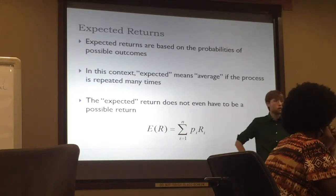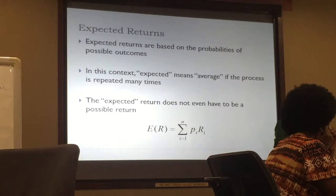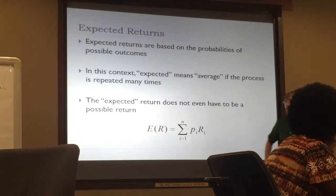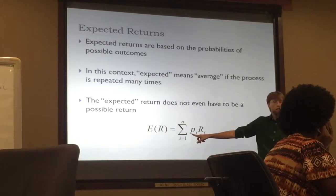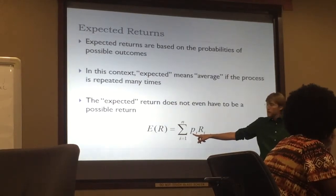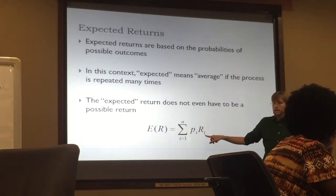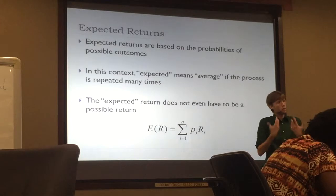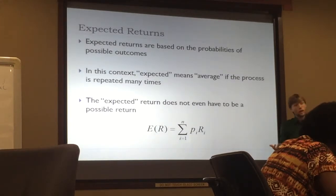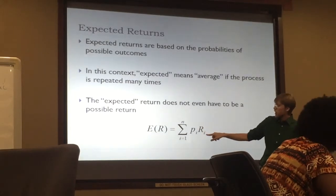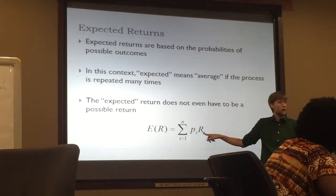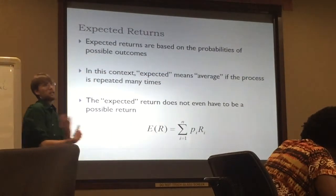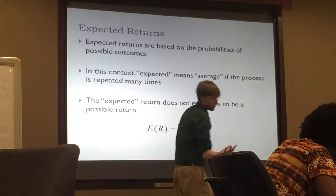If I'm thinking about my expected return going forward, I'm going to divide the future up into N possible future states. Each of those N possible outcomes has some probability PI — some likelihood that it will occur. RI represents the return in state I. My expected return is simply a weighted average: I take each of the possible outcomes RI and multiply them by the likelihood of actually getting those returns, weight them by the likelihood, and sum them up.